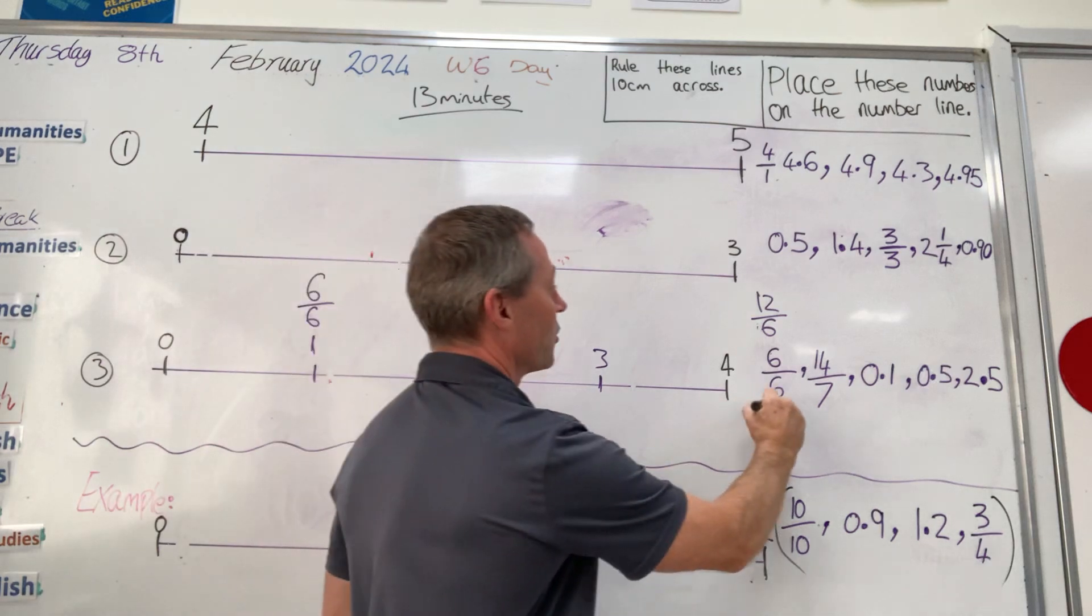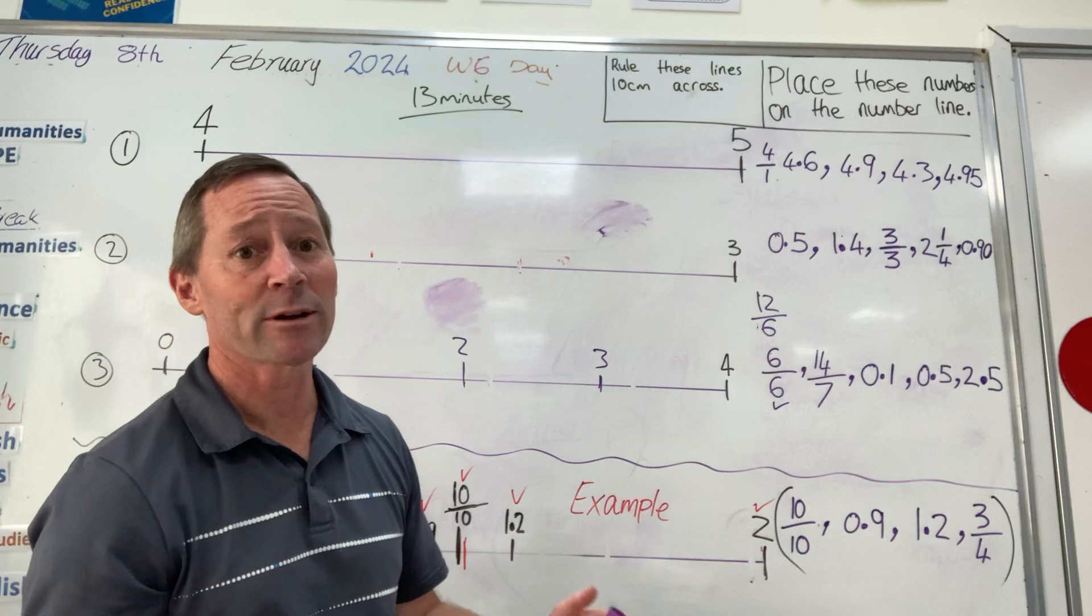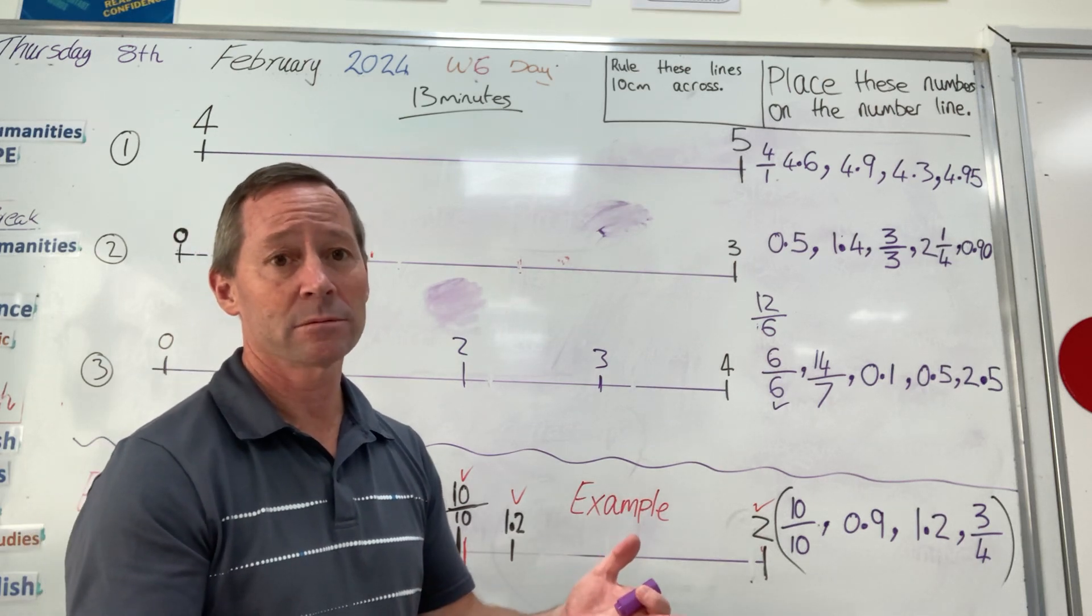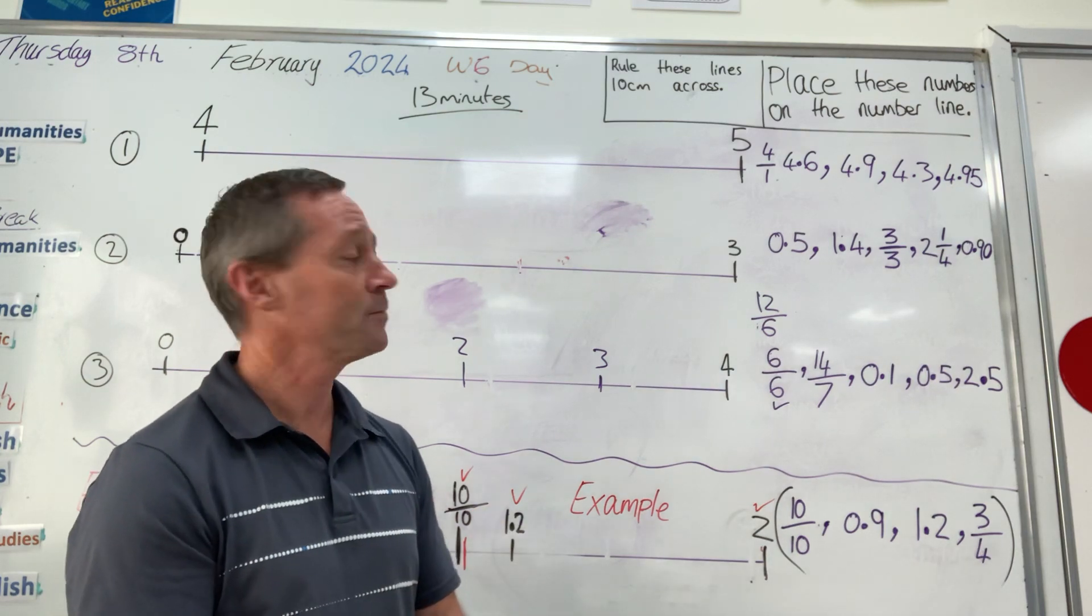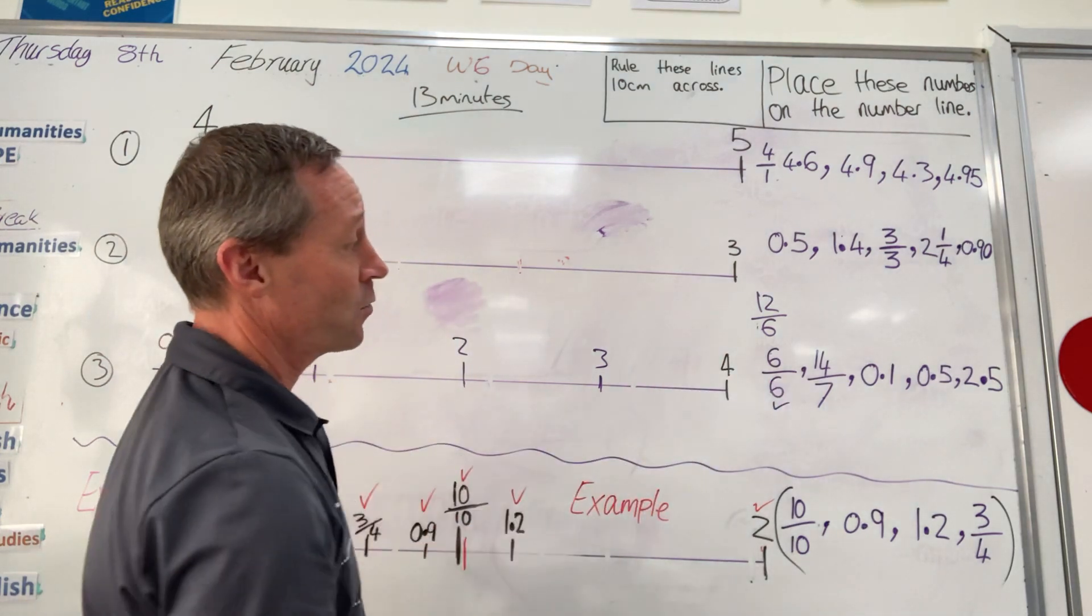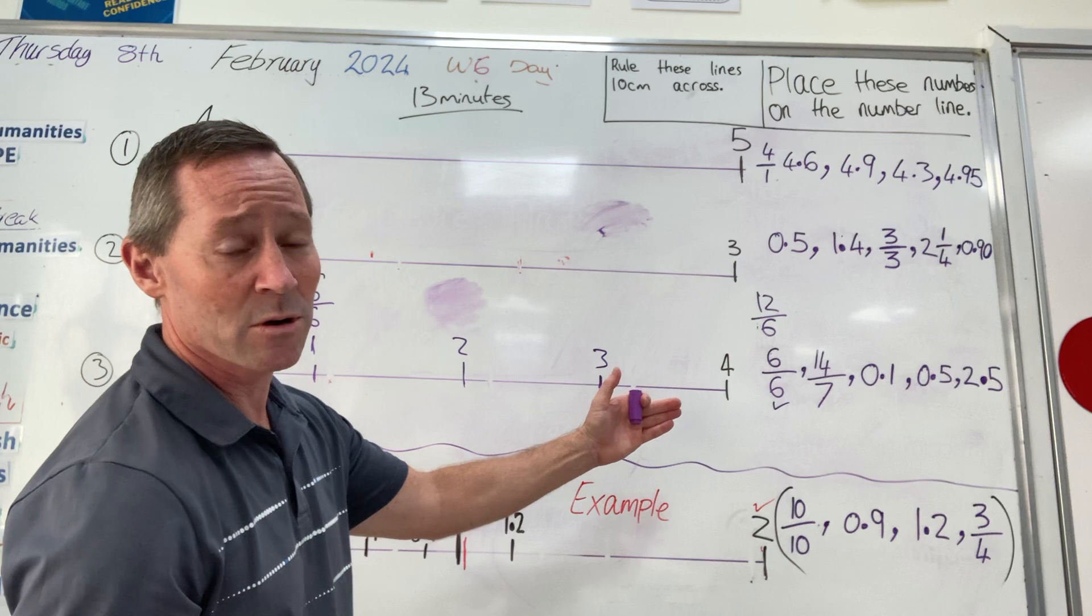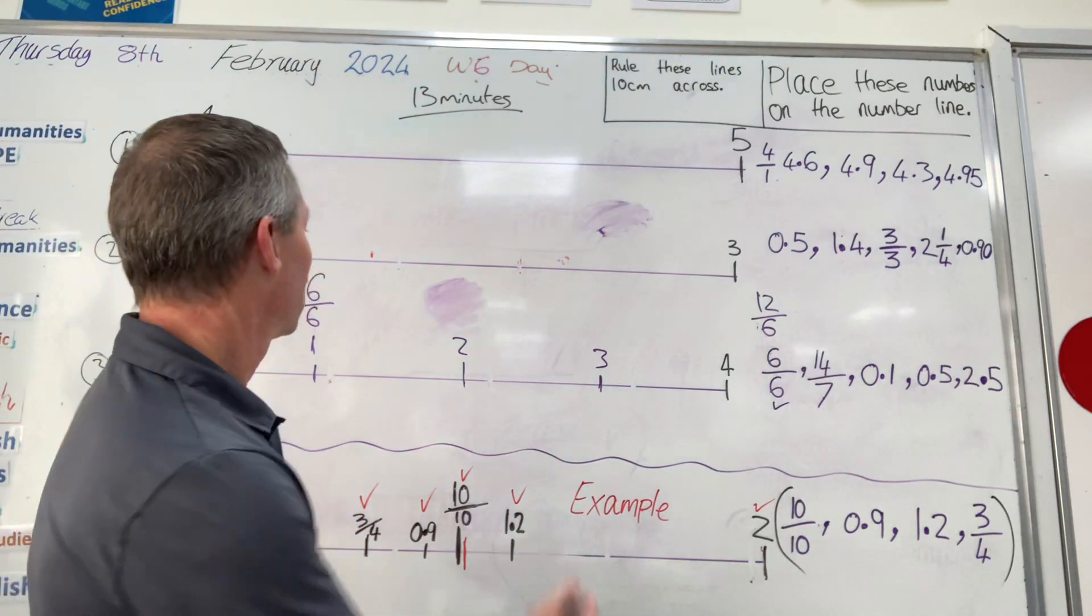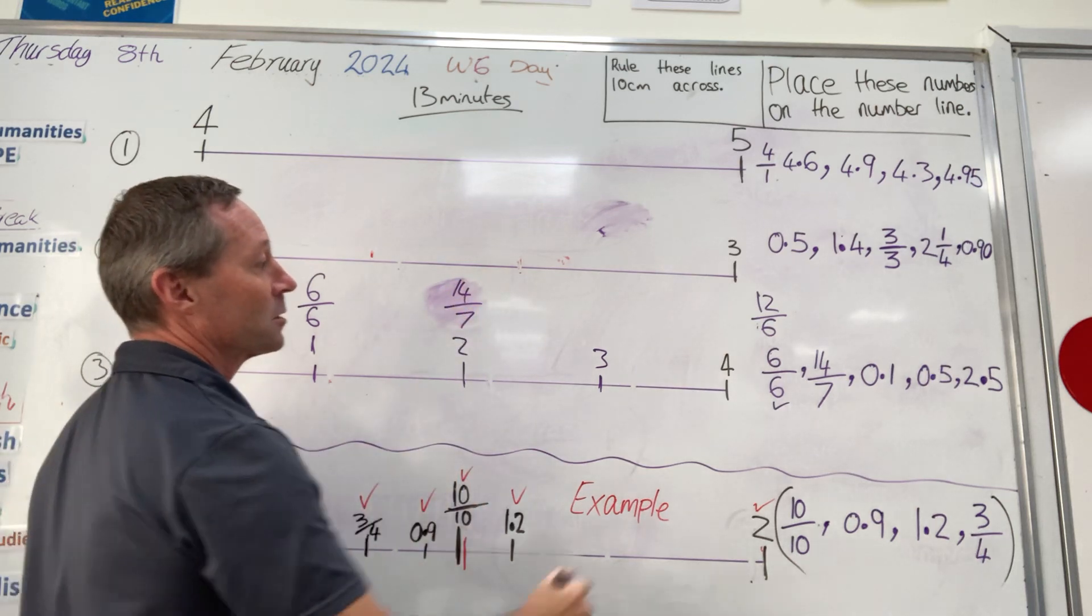So I know this one is correct. 6/6 will equal one whole. If it was 10 tenths, it will equal one whole. If it was 100 out of 100, one whole. 57 out of 57, one whole. Next one says 14/7, and we know we're going to go here. So we've done this one.